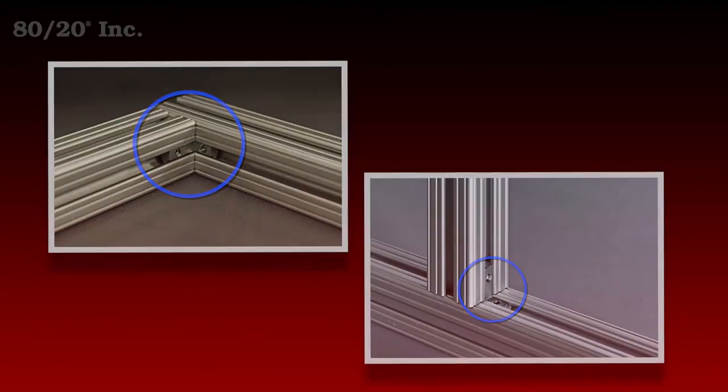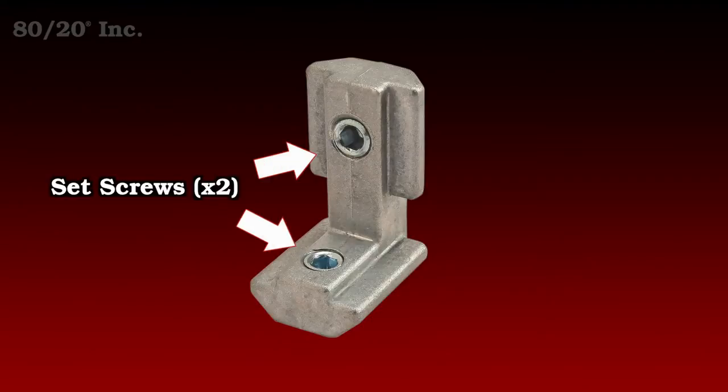Now the hidden corner connector comes in one piece with two set screws already pre-assembled in the fastener. A great aspect of this connector is that no machining is required to your bars.